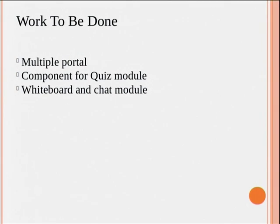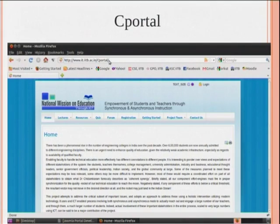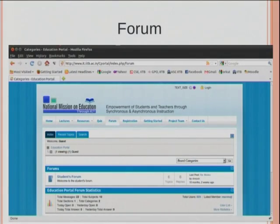We have also put up one more project: the whiteboard and chat module. A chat module may already be available in the forum, but we need to verify whether all the required features are met. These are snapshots of what we have already developed — the main homepage with links for lectures, resources, quiz, forum, and user registration. Dastagir sir will now explain how to create a new Joomla component.